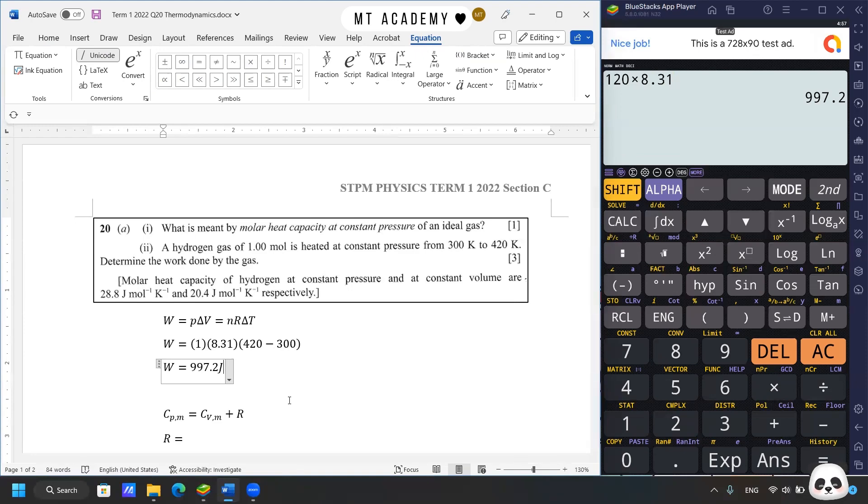Now this is the first thing that is unclear to me. We are given the molar heat capacity as 28.8 and 20.4 joules per mole per Kelvin. If we calculate the value of R from these, it is not 8.31 but 8.4 joules per mole per Kelvin. I don't have the exact solutions, but in my opinion, I will still use the value of 8.31 to solve this question.